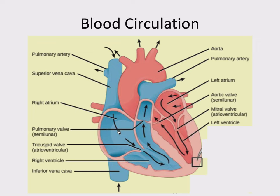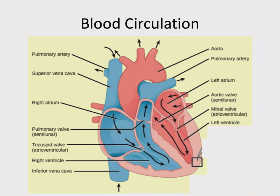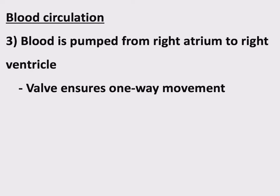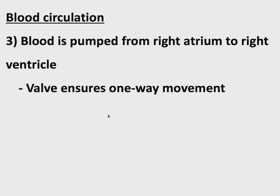This deoxygenated blood moves from the right atrium to the right ventricle. Blood is pumped from the right atrium to the right ventricle, and importantly there is a valve here that makes sure this movement is one way — we don't want back flow. There are names for this valve and the other valve, names for these veins and arteries, but I'm skipping over details that aren't important in an intro course.